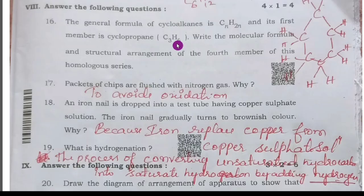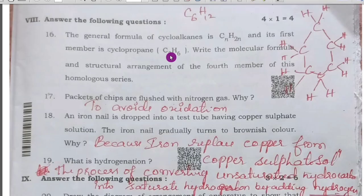Fourth member is C3H6, so fourth member is C3H6. C3H6 is the first member is C4H6. C5H6 is the fourth member. Cyclohexane is the right answer.